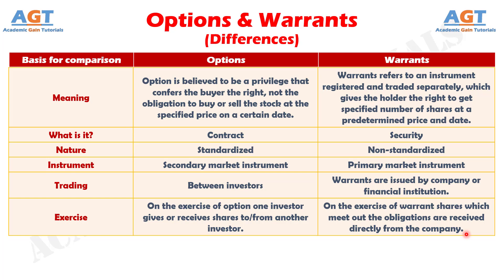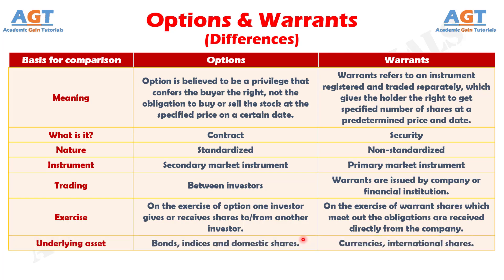Difference number 7: the underlying tradable assets for options are bonds, indices, and domestic shares. Conversely, the underlying tradable assets for warrants are currencies and international shares.